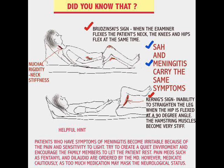In Kernig's sign, we see inability to straighten the leg. There is a lot of sensitivity in the hamstring muscles due to the nerve roots — it's very stiff. That is the inability to stretch the leg when the hip is flexed at a 90-degree angle. Please take the time to go to dearnurses.com and read that case study on meningitis and on subarachnoid hemorrhage, and that will help you understand.